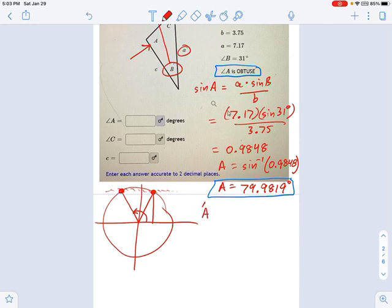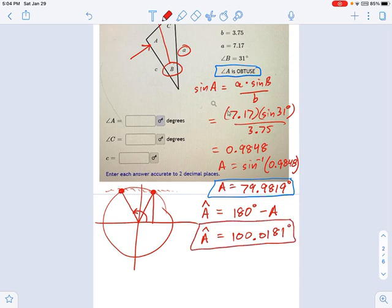The way you find that is doing this: I need an obtuse angle. My obtuse angle is 180 degrees minus that first one I just found. So we type that in here, 180 minus our answer, and we get angle A equals 100.0181 degrees. So question is, which one of these is right? Because they're both possible angles that would satisfy the law of sines. Well, the answer is the obtuse one, because we're told it's obtuse.